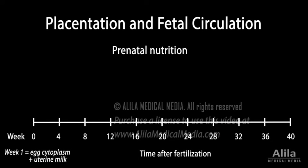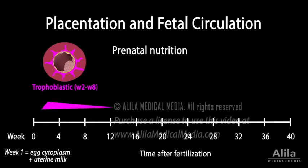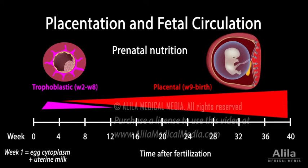Prenatal nutrition consists of two major phases: the trophoblastic phase, where the trophoblast digests and derives nutrition from endometrial tissue from week 2 to week 8, and the placental phase from week 9 onward. There is a long transition period from week 4 to 12 where the placenta gradually takes over the role of feeding the embryo.